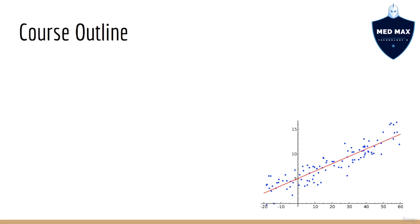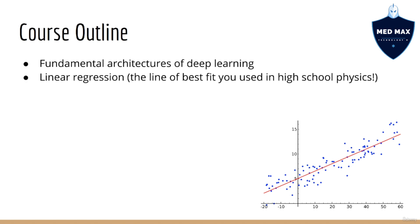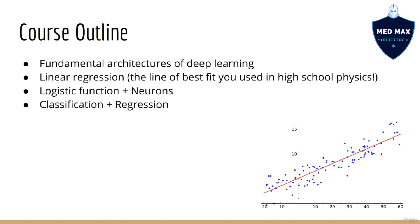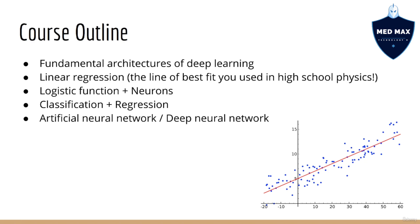Once you've done that, we are going to go through the fundamental architectures involved in deep learning. Believe it or not, this all starts with linear regression — the line of best fit you learned about in high school physics. We'll see that with just one little change — adding the logistic function on top of a linear model — we will get a neuron. This covers the two major types of supervised learning: classification and regression. The first deep learning architecture you'll learn about is the artificial neural network, also known as the deep neural network.